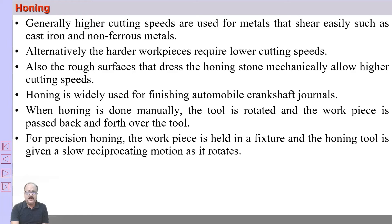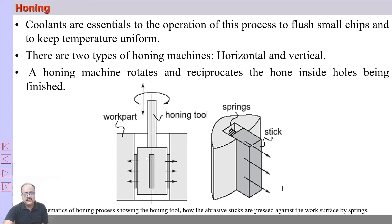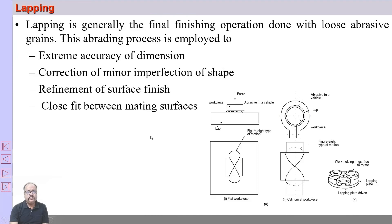Honing can be done manually or mounted on a machine — normally it is mounted on a machine. The honing tool is rotated and reciprocated, just like a drilling machine, as the stones or hones are rotated by the mandrel and also reciprocated.